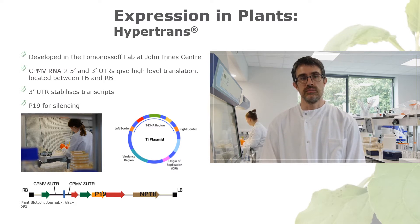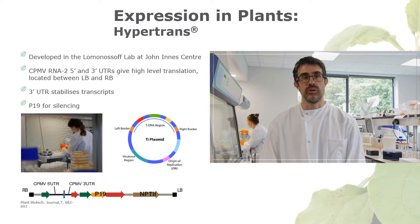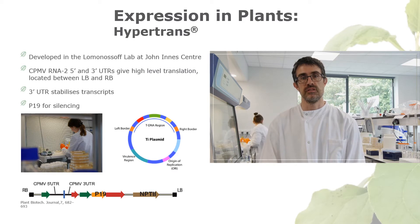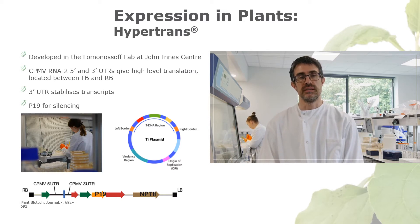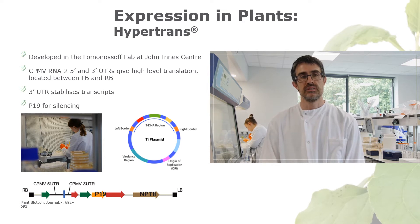Our lab strain of Agrobacterium is a stripped-down version of what is found in nature, meaning it is only capable of transferring a plasmid and will not cause disease. The plasmid or vector which is transferred has been engineered to include elements of a plant virus — a cowpea mosaic virus, or CPMV. Our system uses something called HyperTrans, which essentially acts as a non-replicating viral vector based on the CPMV genome, and transfers to the plant cell via the Agrobacterium.